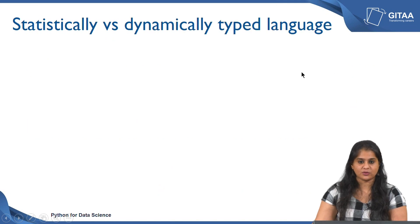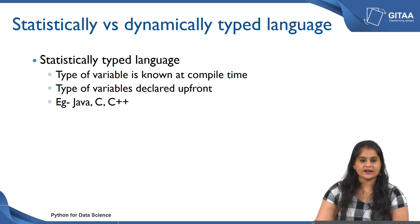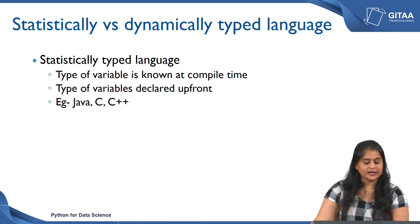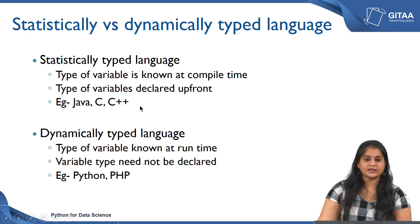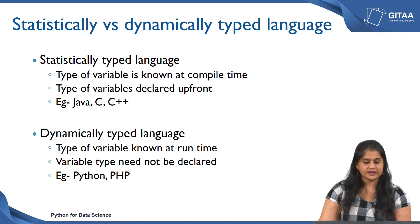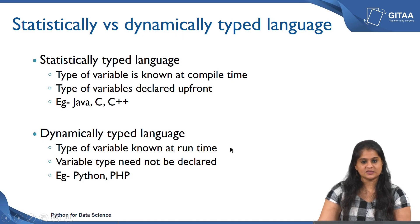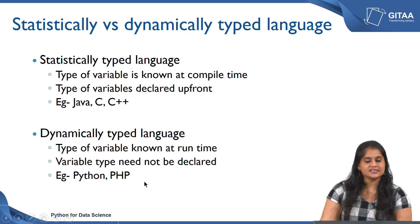Before we go ahead with data type operations, it is important to know the difference between a statically and a dynamically typed language. A statically typed language is one where the type of the variable is known at compile time and you must declare the data type of variables upfront — examples are C, C++, and Java. Contrary to this, a dynamically typed language is one where the data type need not be declared upfront; the type is known only at runtime. Whenever you declare a variable and assign a value, the data type is known the moment that line runs. Python is a dynamically typed language.